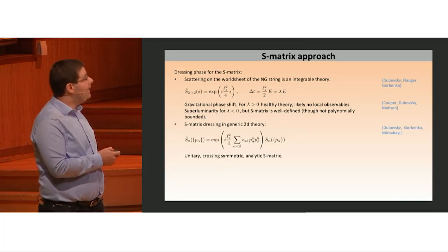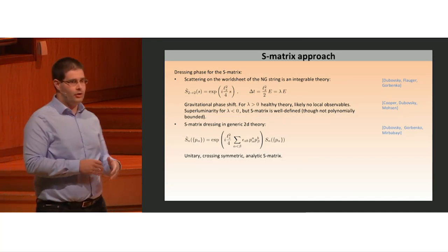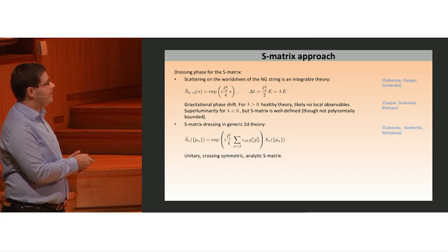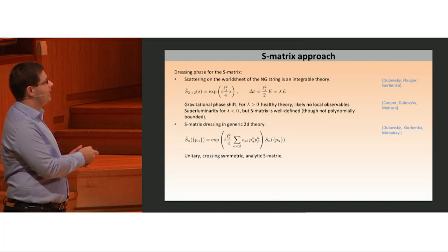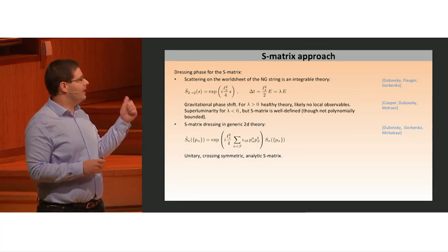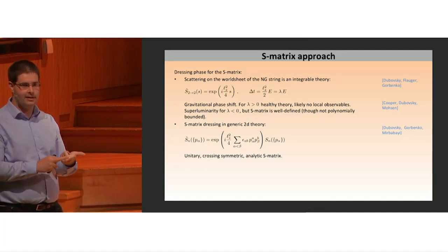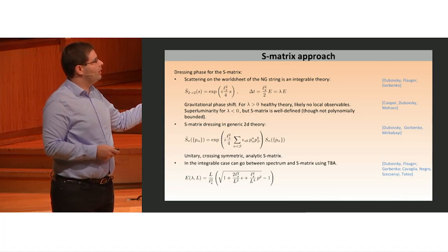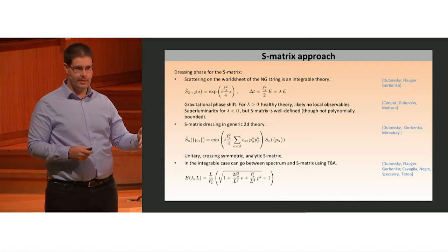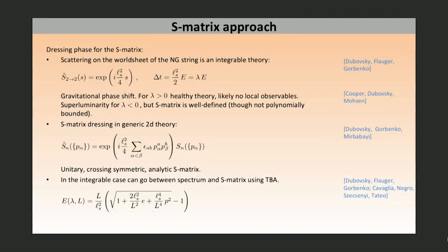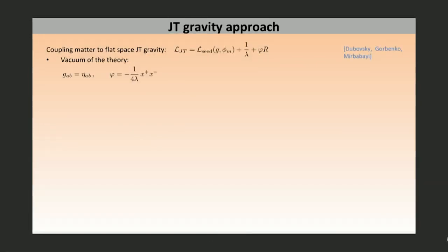This result led to a discovery of a general dressing phase factor for arbitrary, including non-integrable theories. We start from an N-body S-matrix in the seed theory and obtain the dressed S-matrix by multiplying by this phase. Very non-trivially, such a phase exists and is probably unique, satisfying unitarity, crossing symmetry, and analyticity properties. If the theory is integrable, we can go from the S-matrix back to the spectrum using TBA, and we recover the square root formula. This shows that these descriptions are the same.